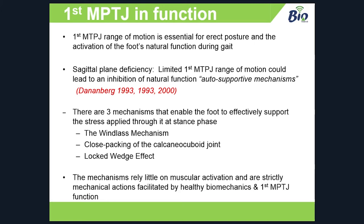He calls it 'auto-supportive mechanisms' — quite a mouthful — and splits these into three separate stages: the windlass mechanism, close packing of the calcaneal cuboid joint, and the locked wedge effect. He basically says that for all of this to happen and for the foot to function correctly, you need enough range of motion weight bearing in the first MPJ. He also says the mechanics rely little on muscular activation and are strictly mechanical actions facilitated by healthy biomechanics at the first MPJ — though we'll query that a little bit later. In a nutshell, the first MPJ has got to work properly for everything else to come into line.